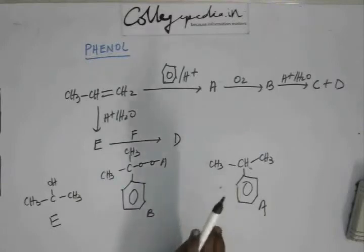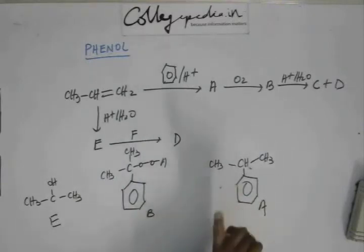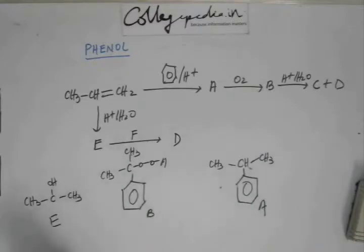You are adding F on E and you are getting D. Now out of C and D, one is phenol and one is acetone. Now from this look at this E. Now this is 2-propanol. Now which one will you be able to produce from 2-propanol? Do you think you are going to get acetone or do you think you are going to get phenol from E?